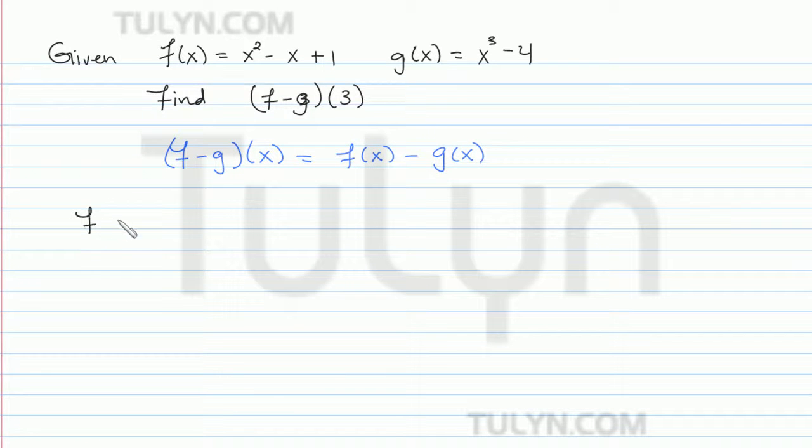So in this case, f minus g of 3 is going to be f of 3 minus g of 3.